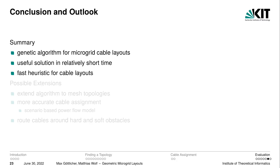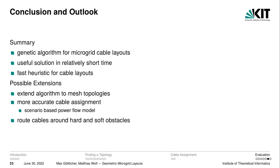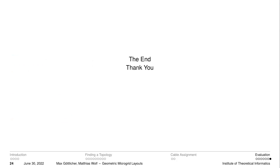So what have we seen? We have seen a genetic algorithm for microgrid cable layouts that is capable of producing useful solutions in relatively short time, guided by a fast heuristic for cable assignments which complements the exact solution computable using Gurobi. Possible extensions in future work include extending the algorithm to cover mesh topologies, computing more accurate cable assignments using a scenario-based power flow model, and incorporating hard and soft obstacles such as houses around which cables are routed. I hope you found the talk interesting — thank you for your attention.